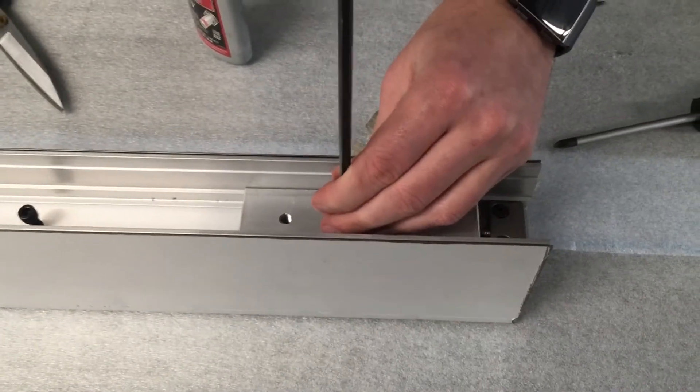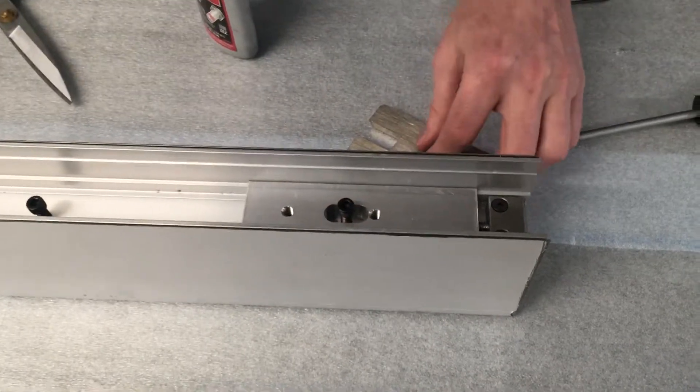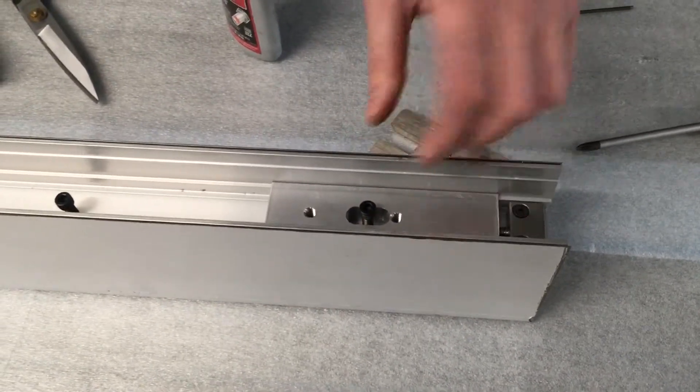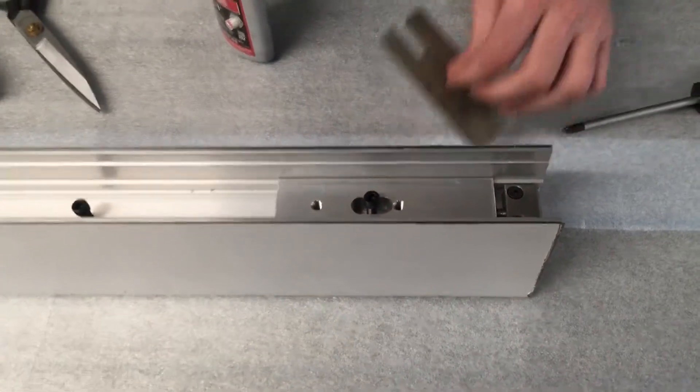Don't overtighten it, just start it because these fasteners will be tightened once the door rail is applied to the glass.